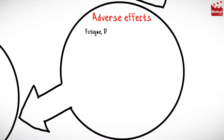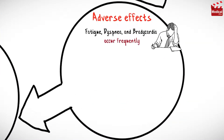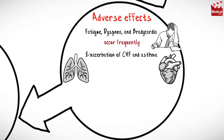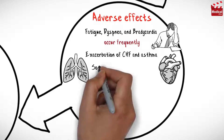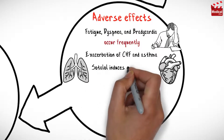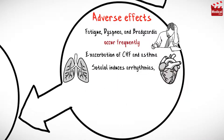Fatigue, dyspnea, and bradycardia occur frequently, probably caused by the beta-blocking actions of sodalol. Exacerbation of congestive heart failure and asthma can also occur. Sodalol induces arrhythmias, usually torsades de pointes, in 4.6% of patients.